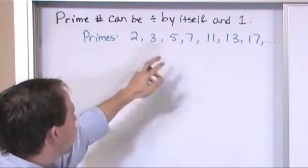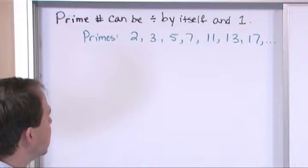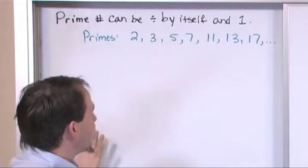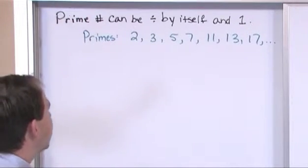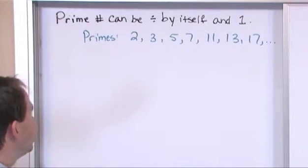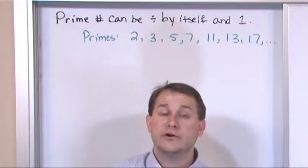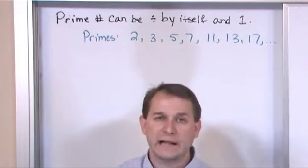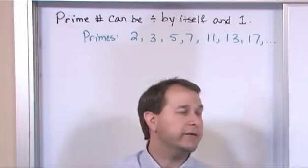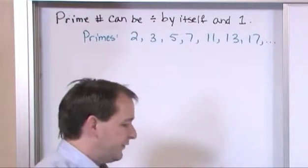For instance, the number three can only be divided by three and one. If you try to divide three by another number like two or five or anything else, you're not going to get a nice even division. You're going to get a decimal. Take the number eleven. You can divide eleven by eleven and you can divide eleven by one but you can't divide eleven by anything else. These are the list of what we call prime numbers.